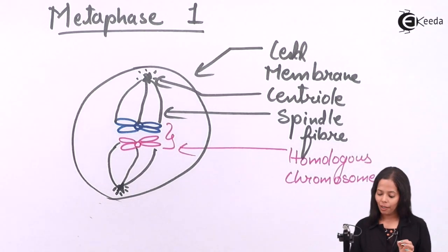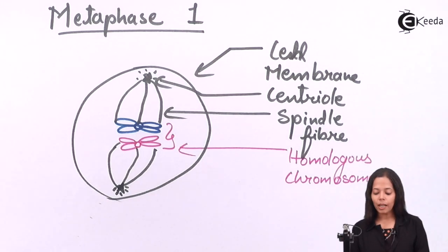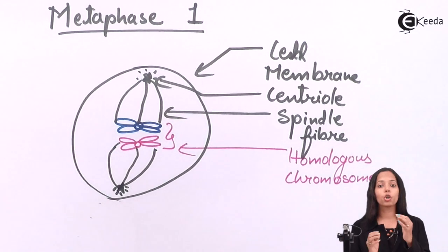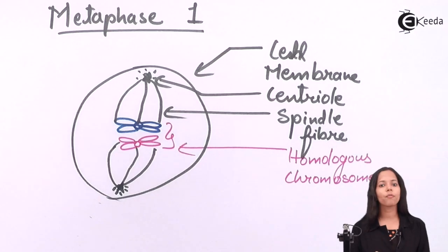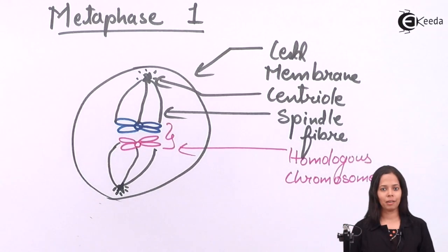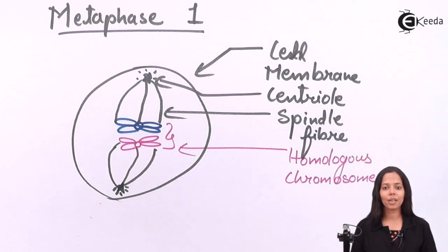In this case, you can see the spindle fibers have attached to the chromosomes. Centrioles are present at the polar region, and chromosomes, more specifically homologous chromosomes, are present at the equatorial plane. This is all about metaphase 1.